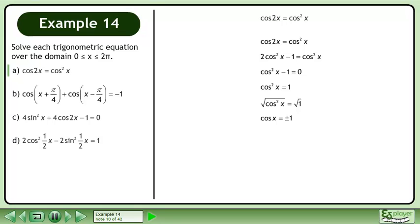This gives us cosx equals positive or negative 1. The solution is x equals 0, π, and 2π.